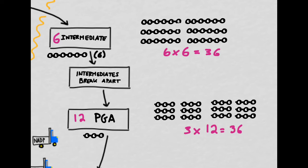During the intermediate step of the carbon cycle, we had six six-carbon molecules for a total of 36 carbons. When they rearrange themselves after breaking apart from their more unstable form, they form 12 smaller molecules, each with three carbons. So 6 times 6 is equal to 36, and 3 times 12 is also equal to 36.